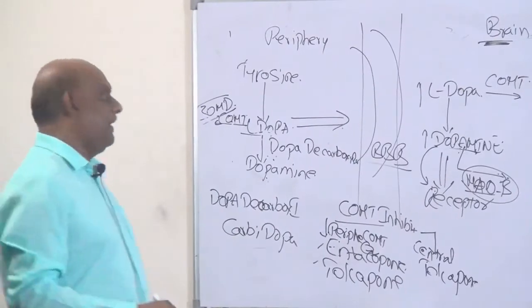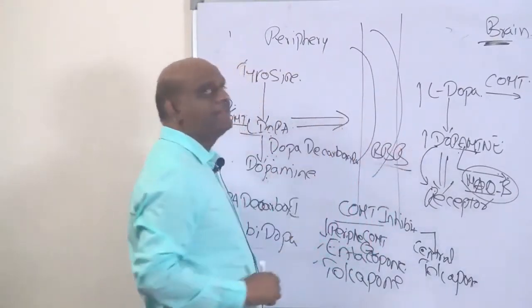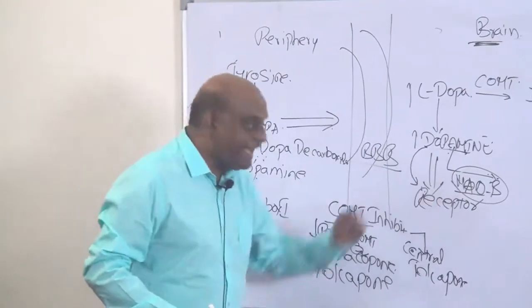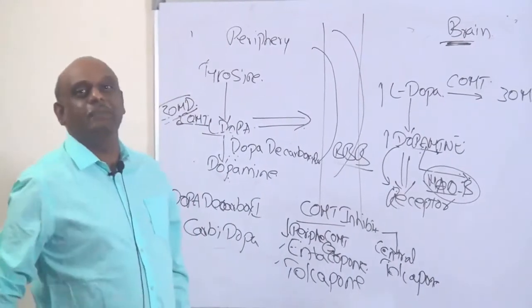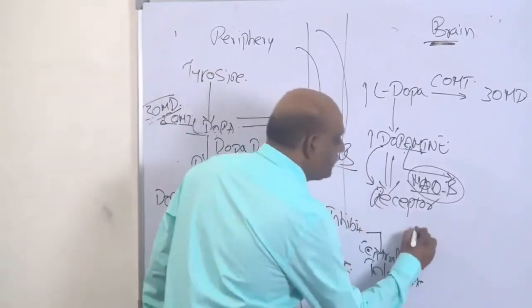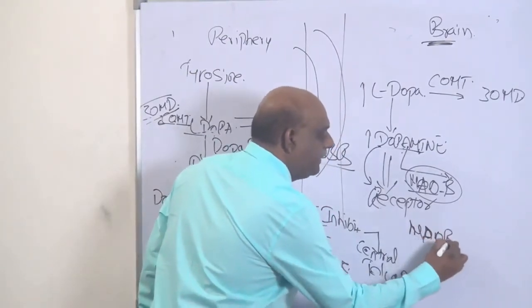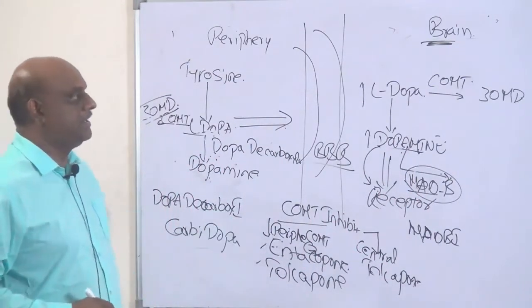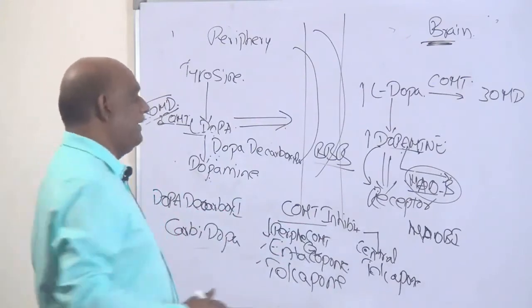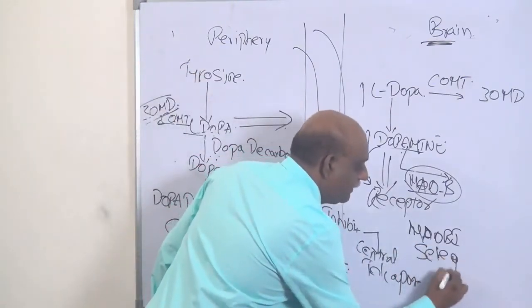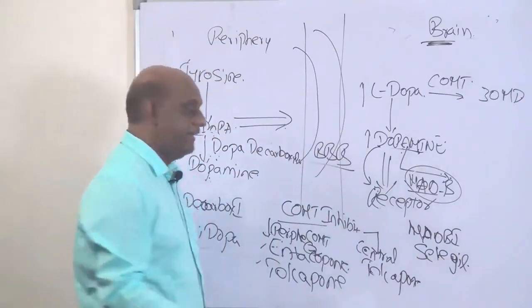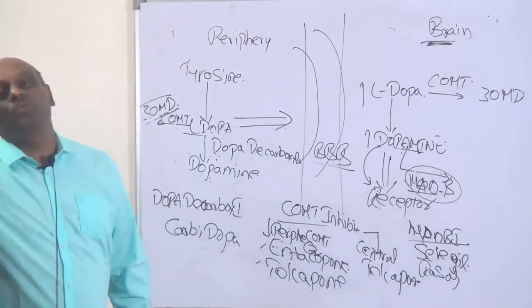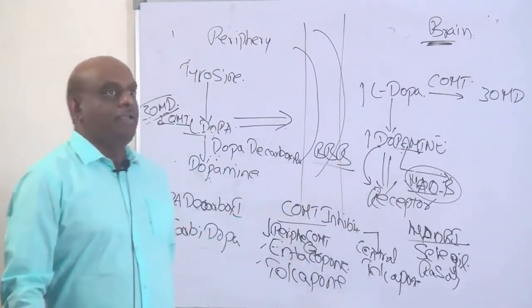Then what else can you do? Even if dopamine is high, it can get destroyed before it marries the receptor because of the action of MAO-B. We want a MAO-B inhibitor. So what are the drugs which are called MAO-B inhibitors? You are having selegiline and rasagiline, which are MAO-B inhibitors.